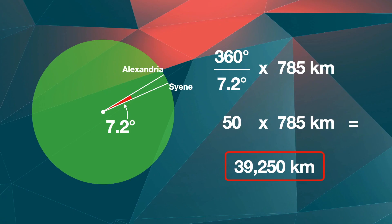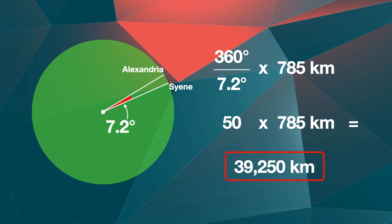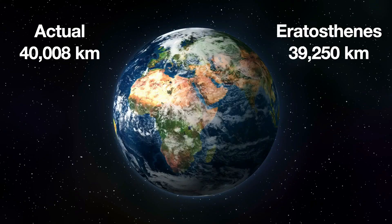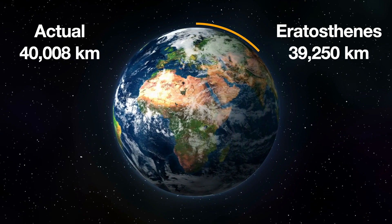Using this knowledge, Eratosthenes multiplied 785 by 50 and found earth's circumference around the poles to be 39,250 kilometers. Eratosthenes' result was quite accurate with an error of just 1.9 percent, as we now know earth's polar circumference to be 40,008 kilometers.